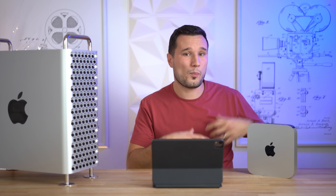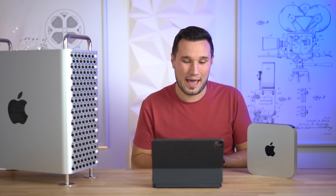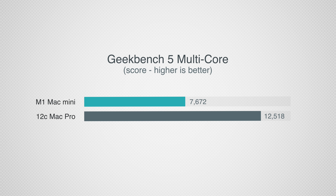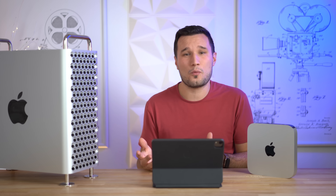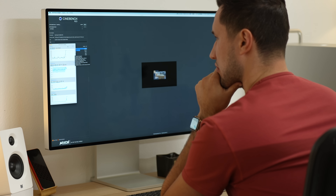The single-core performance of the M1 Macs is just off the charts, beating every other CPU out there. You can actually tell day-to-day — opening folders and applications feels super quick on the Mac Mini. For multi-core, this is where the Mac Pro shines with a score 63% higher, and it'll be interesting to see how this affects real-world performance. Geekbench tests a wide variety of tasks and most don't max out the CPU.